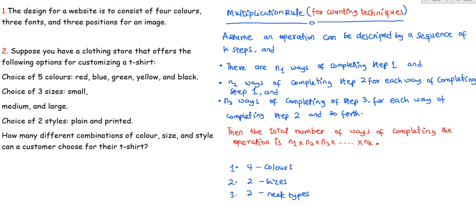For the first step, you pick a color out of four colors, so there are four ways of picking a color — four options. For the second step, we have two options for size, so there are two ways of carrying out step two. For the third step, you have two ways of picking the neck type. So n1 equals four, n2 equals two, and n3 equals two.